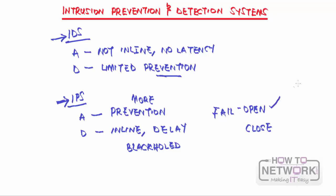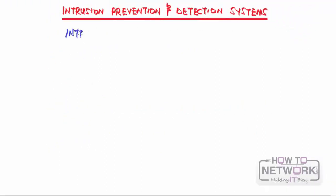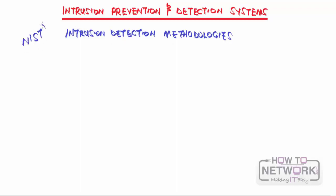Fail-close means that if the device fails, nothing passes through. Fail-open means that if it fails, traffic is allowed to pass through. Now let's look at the different intrusion detection methodologies. According to the National Institute of Standards and Technology (NIST), there are three main methods.